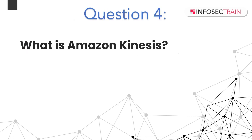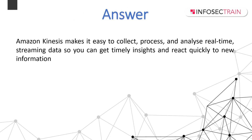What is Amazon Kinesis? Amazon Kinesis makes it easy to collect, process, and analyze real-time streaming data so you can get timely insights and react quickly to new information. With Amazon Kinesis you can ingest real-time data such as videos, audio, application logs, website data, and IoT telemetry data for machine learning, analytics, and other applications. It enables you to process and analyze data as it arrives and respond instantly, instead of having to wait until all data is collected before processing begins.